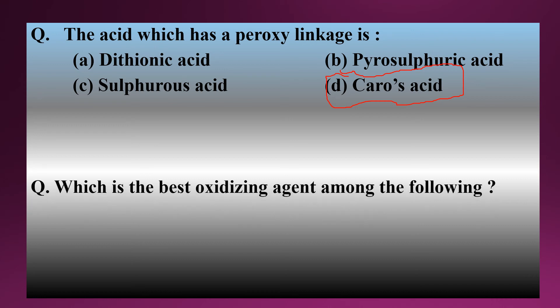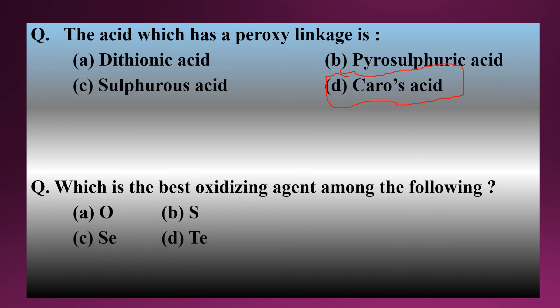The next question is: which is the best oxidizing agent among the following? Options are oxygen, sulfur, selenium, and tellurium. The correct answer is option one — oxygen. Oxygen is the best oxidizing agent due to its higher electronegativity compared to all other group 16 elements.